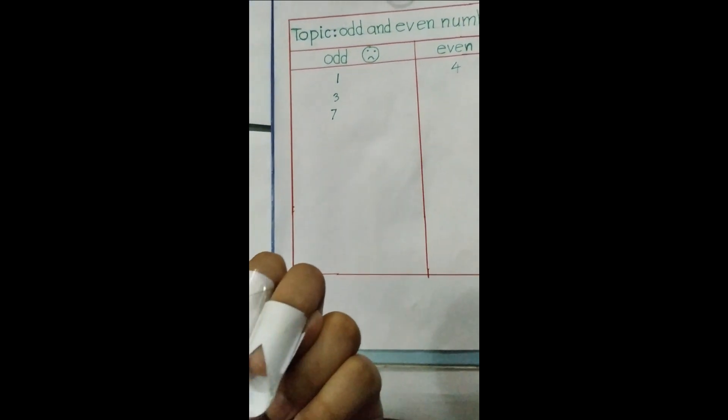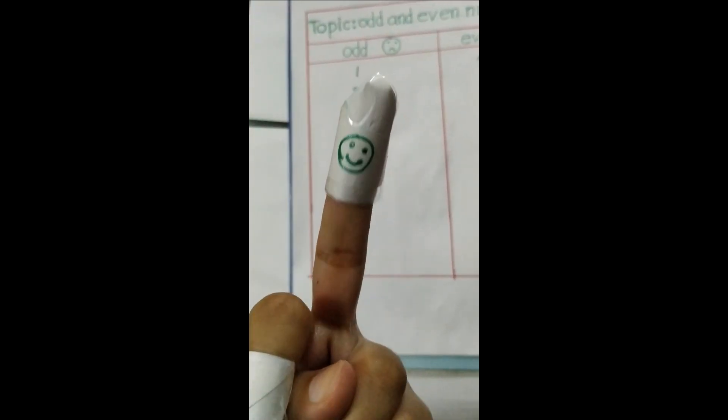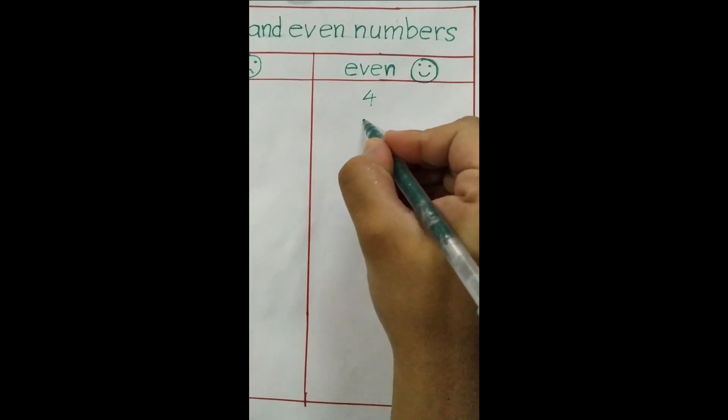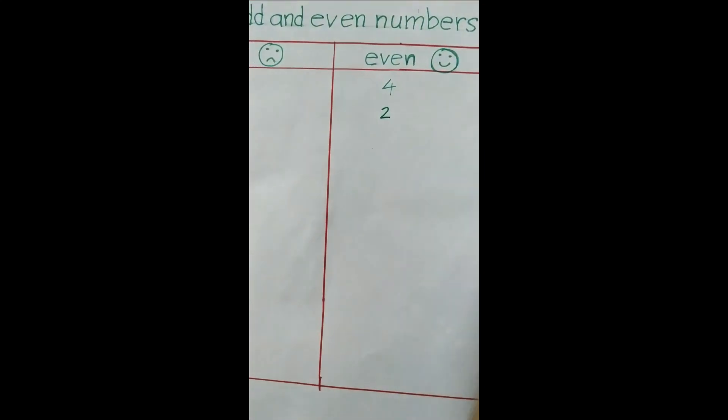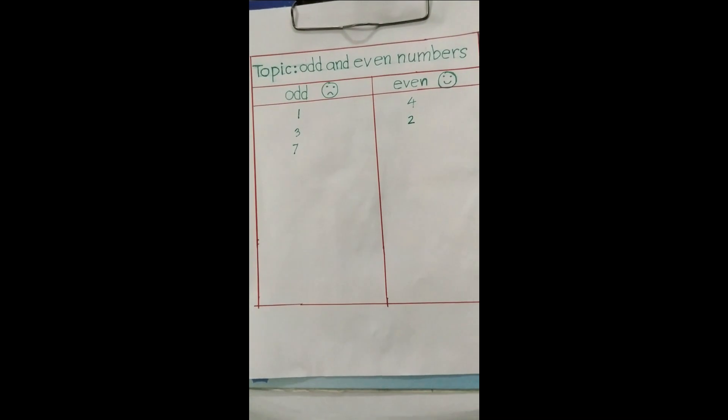Another thing, if I want to write two: one, two. Two has lots of friends, that means two is happy. So we can write here two. Now I can show you another activity.